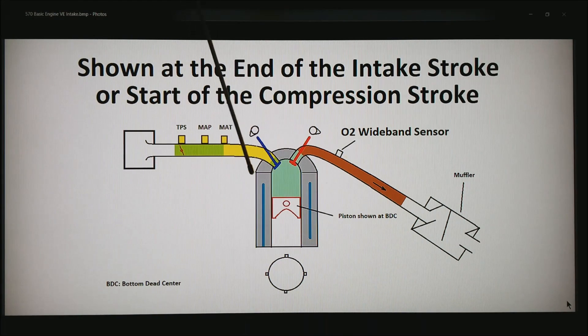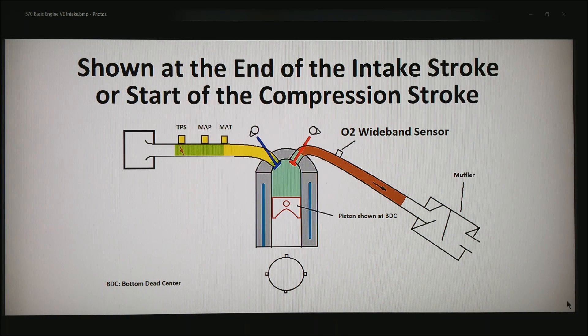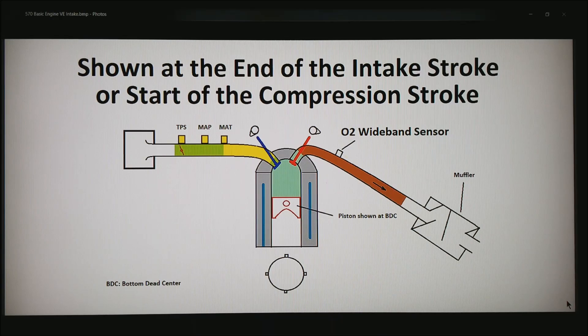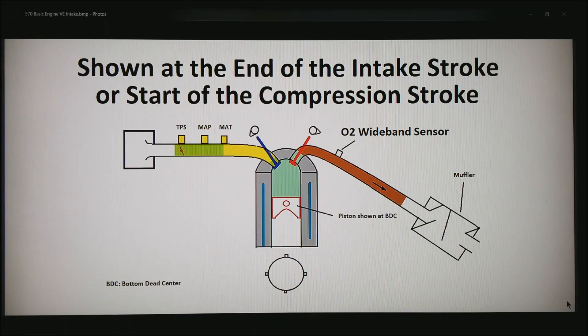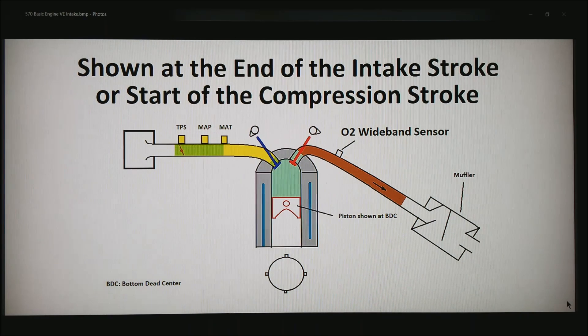It's this combination of all these things going on that makes it very difficult to calculate. We simply don't have a sensor that can calculate all of this stuff. But what we do have luckily is the O2 wideband sensor in the exhaust system, so that we can verify what was the mixture in the combustion chamber after we burned it, how much oxygen is left in it.